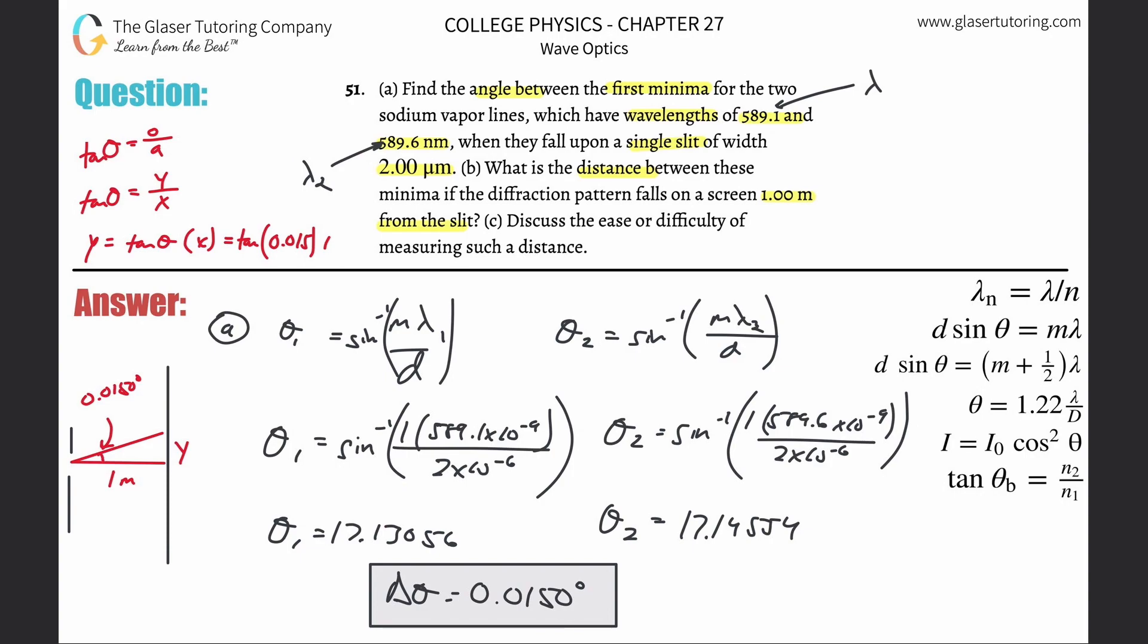This works out to be 2.62 times 10 to the minus 4 meters. That's 0.2 millimeters or 262 micrometers. Discuss the ease or difficulty of measuring such a distance. You can't see it with your eye. You need some type of apparatus to enlarge it like a magnifying glass. Or I don't think a good pair of glasses would work. It's too small.